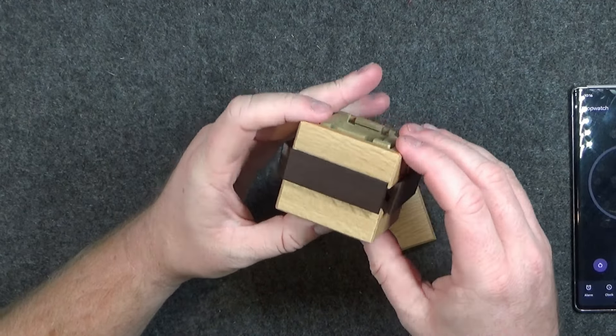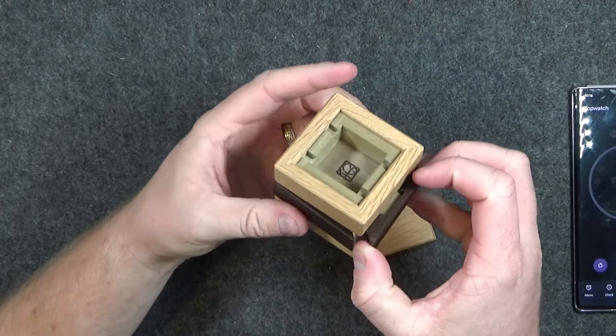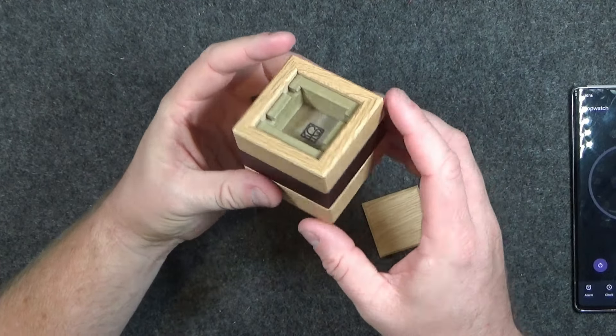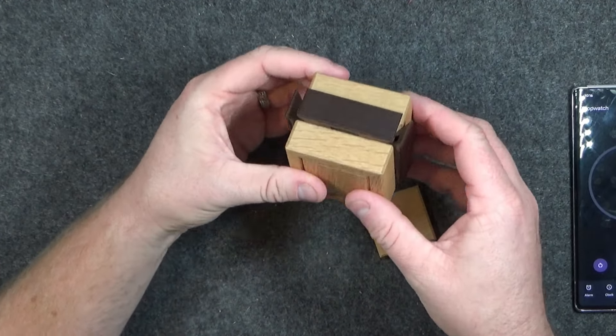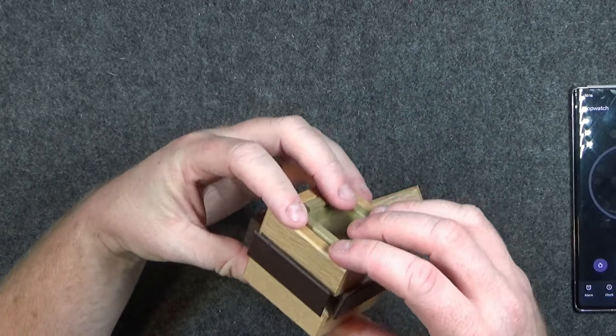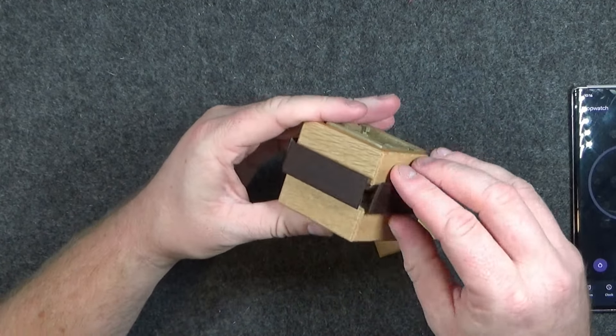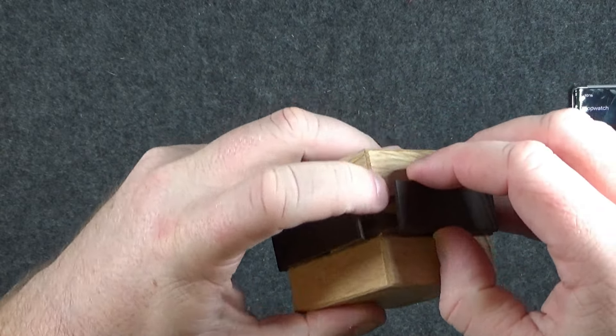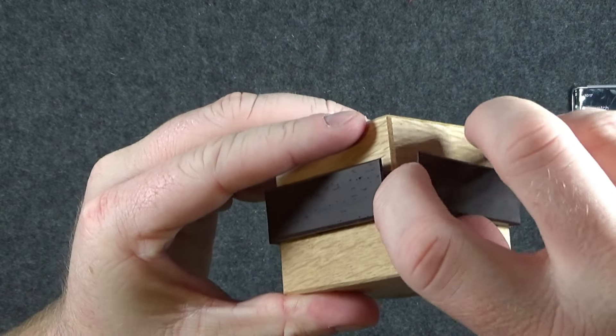It seems like they might be magnetic too, because I can pull it out and then it snaps back in. So there must be like, oh, I see. Okay, so there's a little wedge right here.